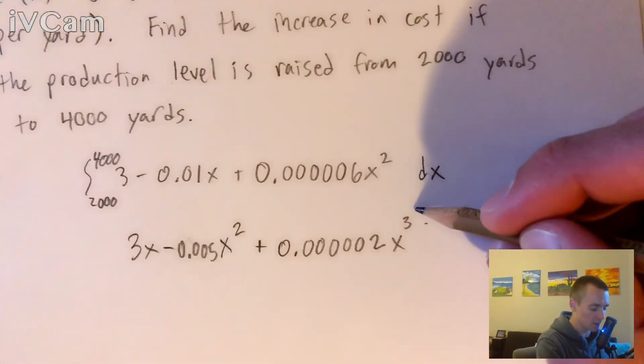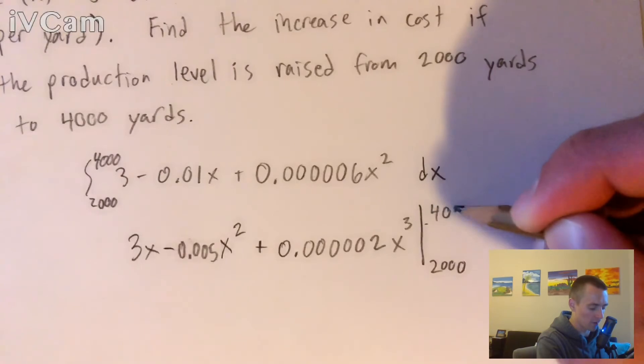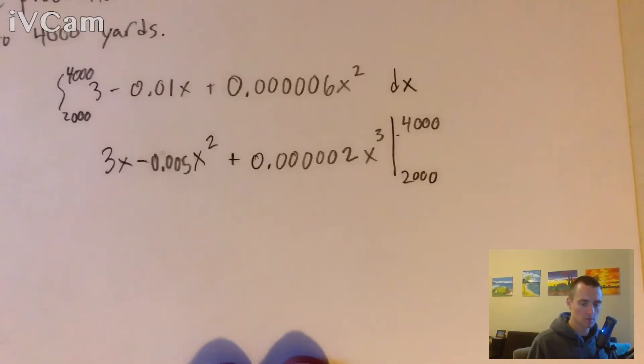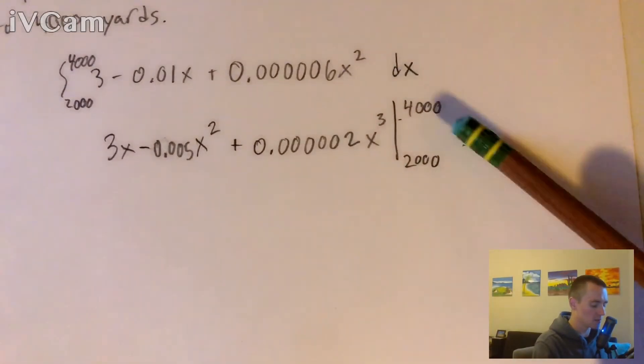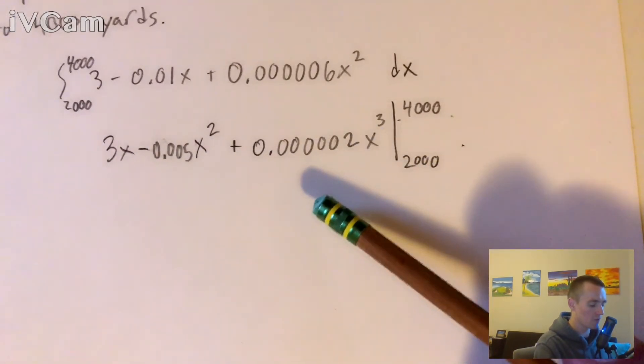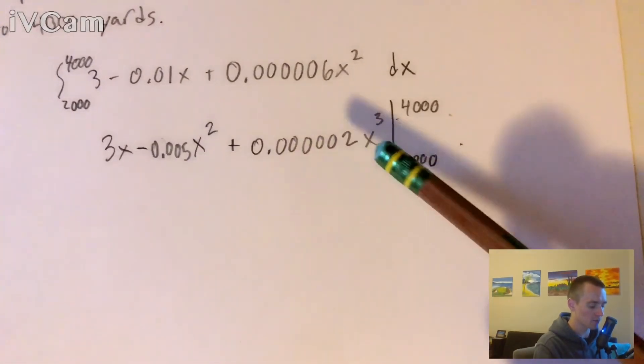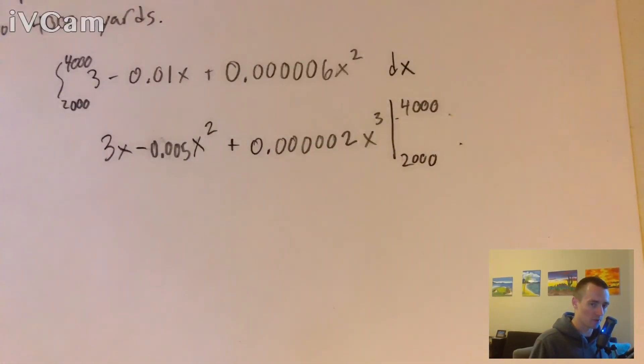And then what we need to do is evaluate this from 2,000 to 4,000, which basically just means plugging in 4,000 for x into this function, figure out what that number is, then plug 2,000 in for x, figure out what that number is, and then take the difference between them.